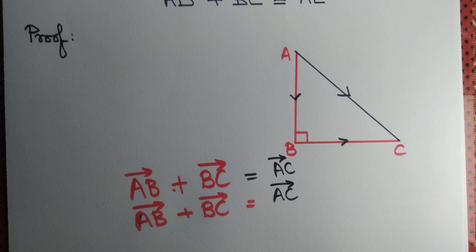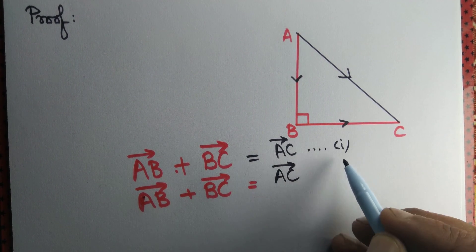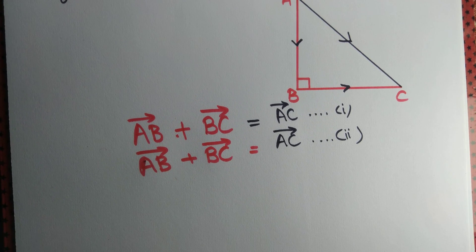Let's multiply both. We write this as equation 1 and this as equation 2. Let's take dot product of equation 1 and 2.